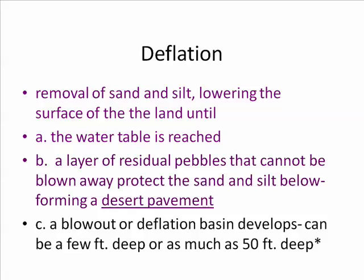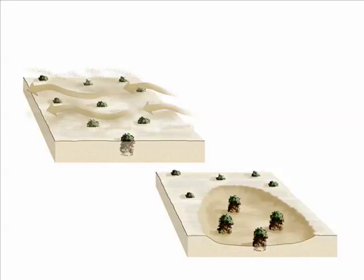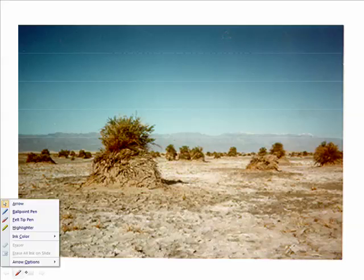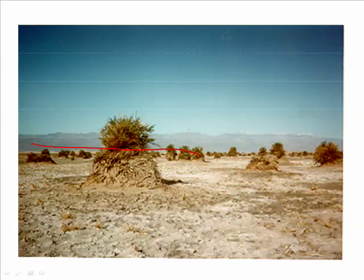A blowout or deflation basin can be as deep as 50 feet. In this diagram you can see wind blowing sand away from the few sparse plants — these are arrowweed plants. As the sand is blown away, you have a lowered land surface and the plants are left standing on top of their own roots. This is what happened at Devil's Cornfield. You can see the original surface of the land was up there, but it has since deflated.